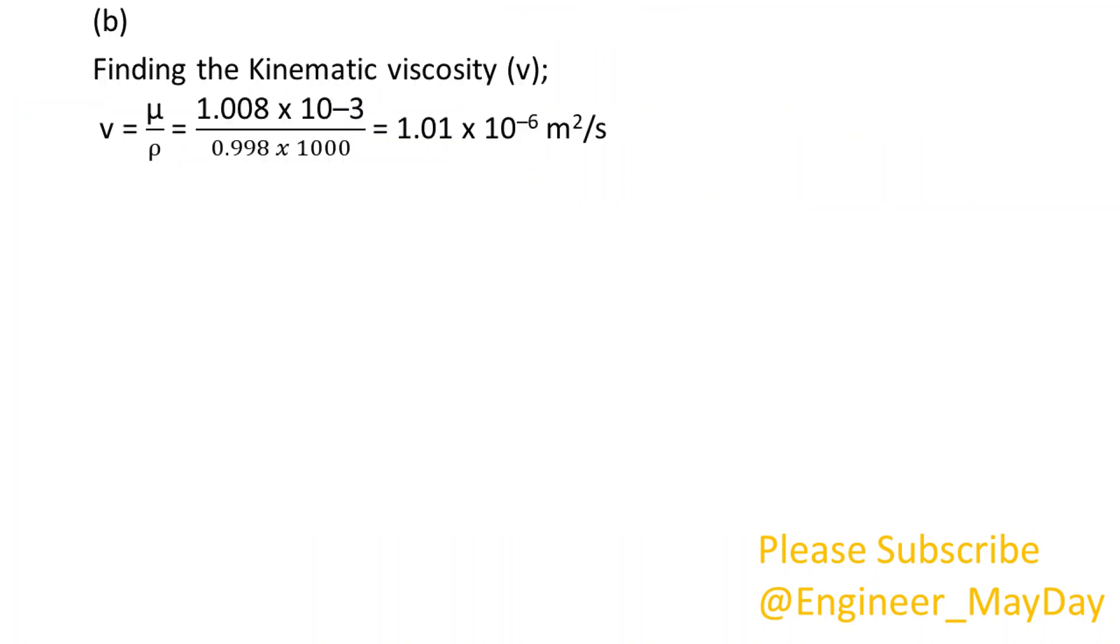B. Finding the kinematic viscosity, v. V equals 1.01 times 10 to power minus 6 squared meters per second.